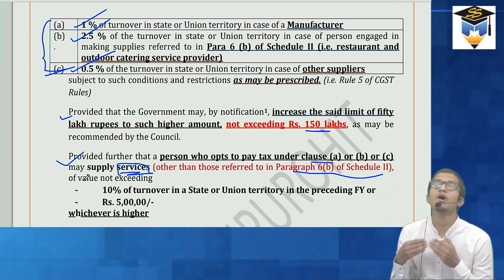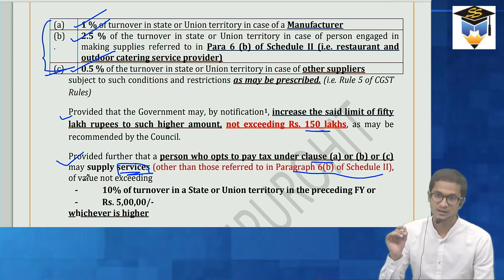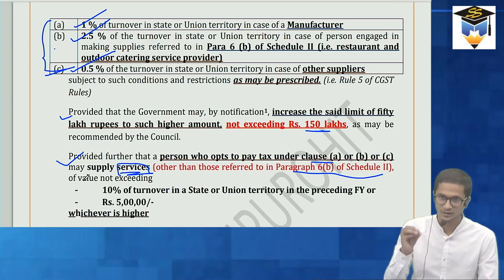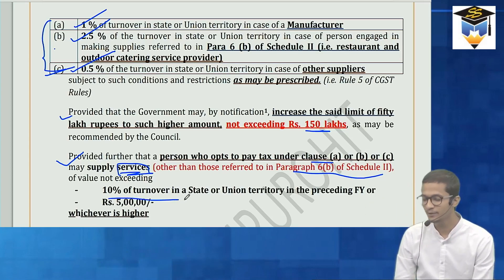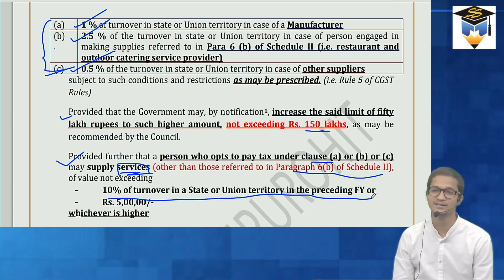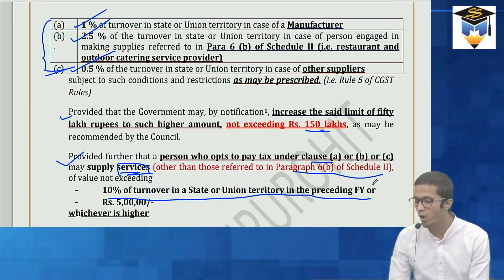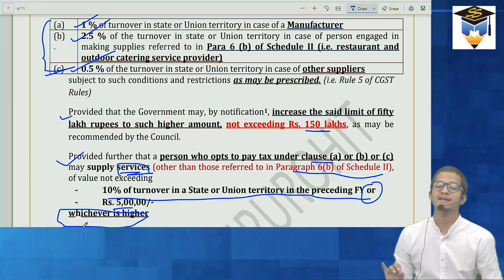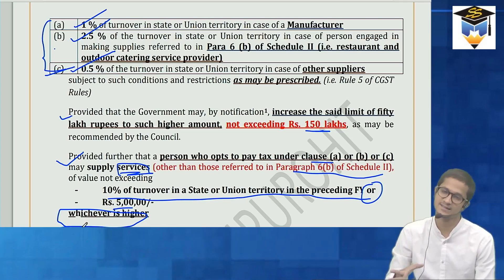Whoever goes into composition scheme generally cannot give services — that's the disqualification we'll read. But the second proviso gives an exception: you can provide services up to 10% of turnover in state or union territory in the preceding financial year, or Rs. 5 lakh, whichever is higher. So up to that amount you can provide services.